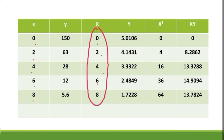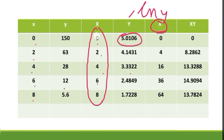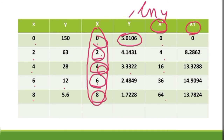To find capital Y, compute ln y: ln 150 = 5.0106, ln 63 = 4.1431, ln 28 = 3.3322, ln 12 = 2.4849, ln 5.6 = 1.7228. For X²: 0, 4, 16, 36, 64. For X times Y: 0×5.0106 = 0, 2×4.1431 = 8.2862, 4×3.3322 = 13.3288, 6×2.4849 = 14.9094, 8×1.7228 = 13.7824.